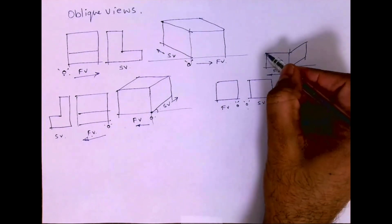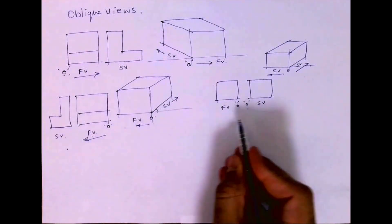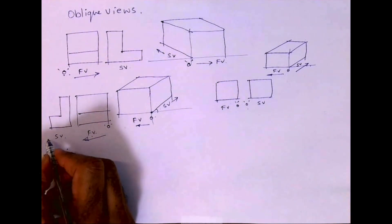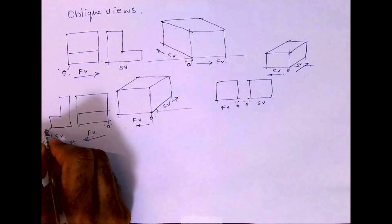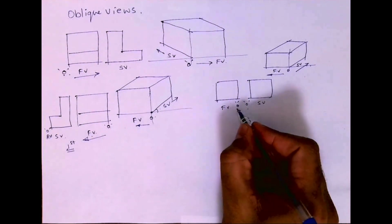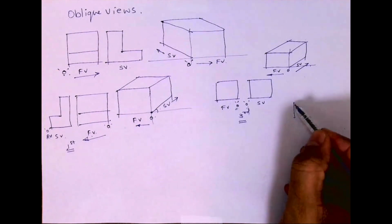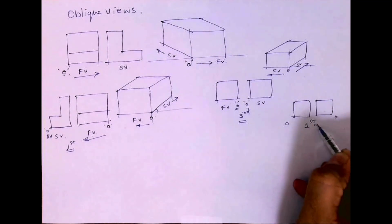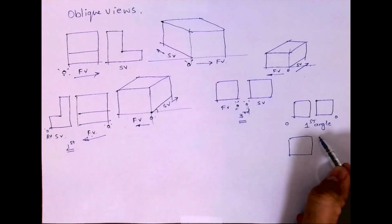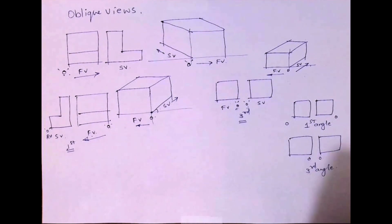Now, what is the difference between this sum and the previous one? In this case, it was a right-hand side view but in first angle. If the origin is far apart from the views, it is a first angle projection. If the origin is nearby, it is a third angle projection. Remember: origin apart means first angle, origin nearby means third angle.